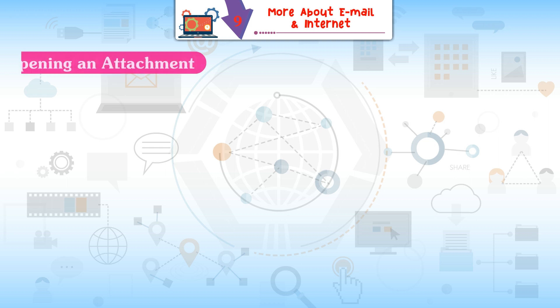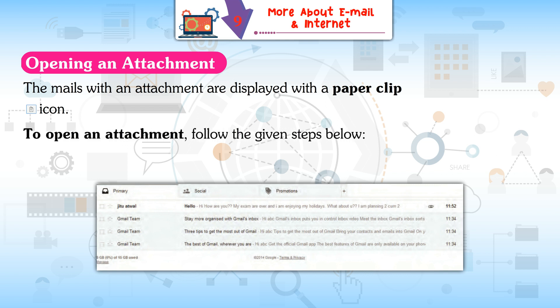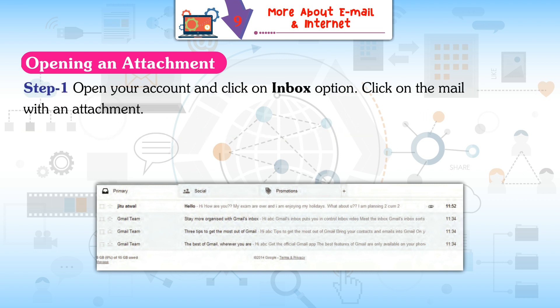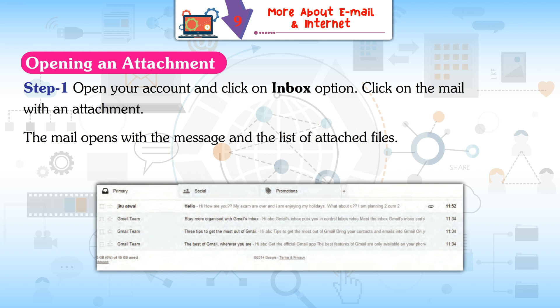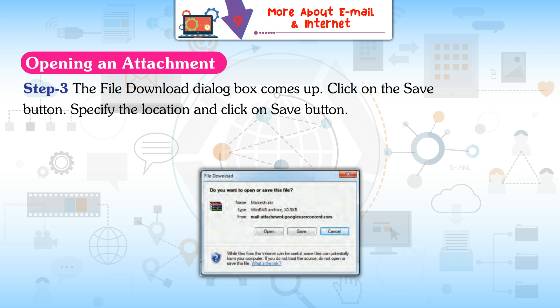Facts to learn: Unread mails are always highlighted. Mails with an attachment are displayed with a paperclip icon. To open an attachment: Step 1: Open your account, click on Inbox, and click on the mail with an attachment — the mail opens with the message and list of attached files. Step 2: If there are more than one attached files, click 'Download All Attachments' to download all files to your hard disk. Step 3: The File Download dialog box comes up — click Save, specify the location, and click Save.